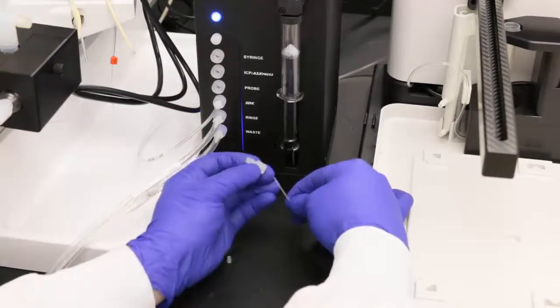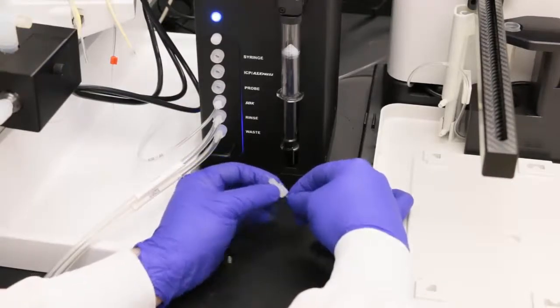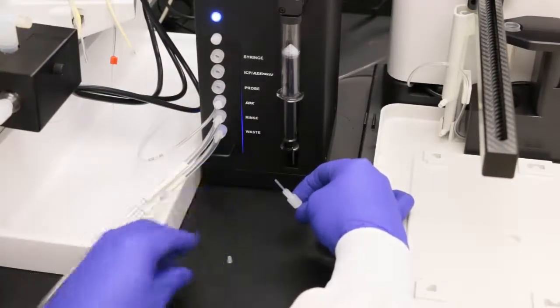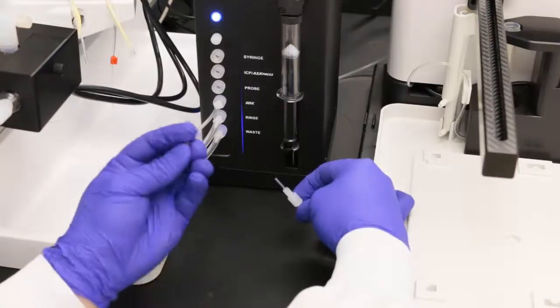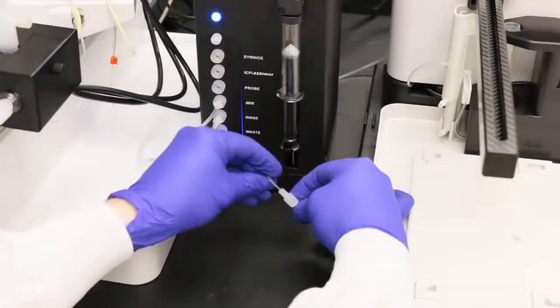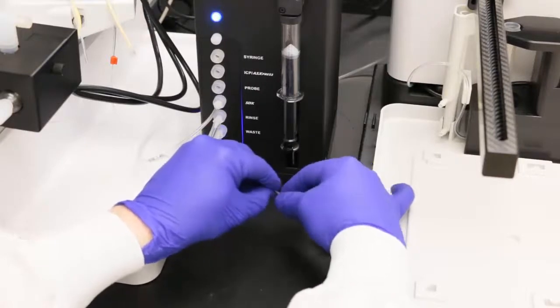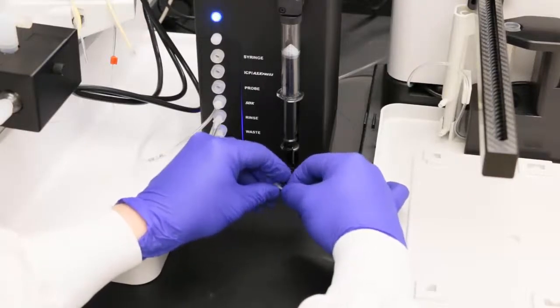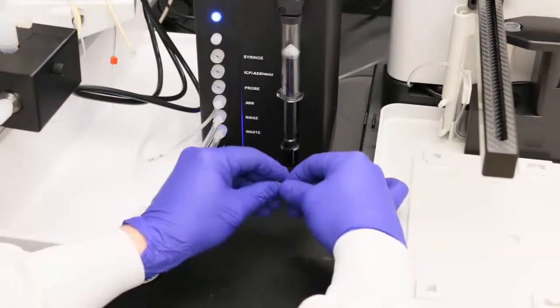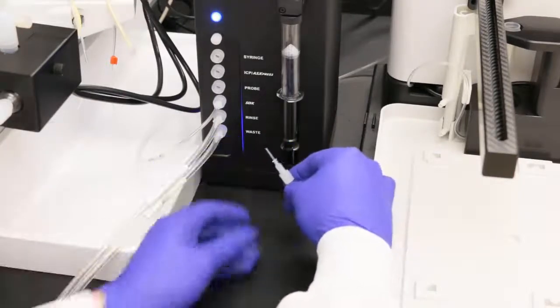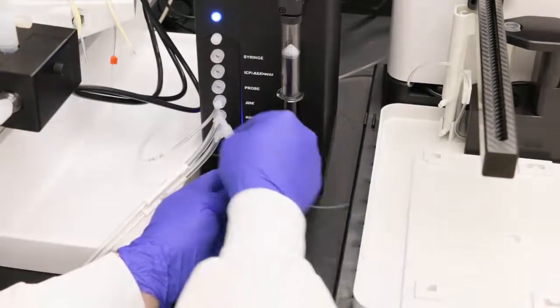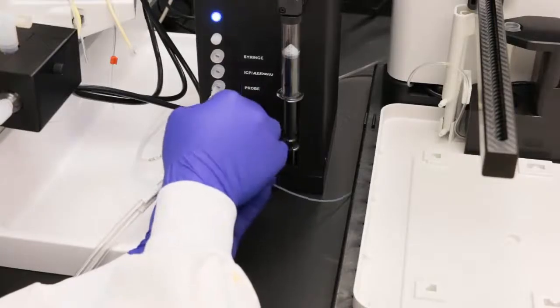Install the nut and ferrule on the end of the sample probe tube. The flat end of the ferrule should face the end of the tube. Now connect the sample probe to the probe connector.